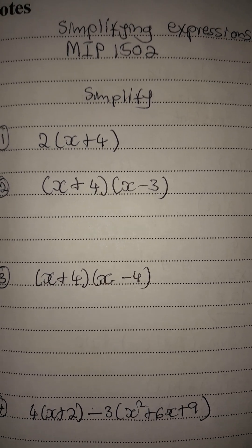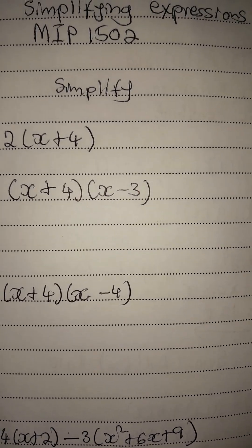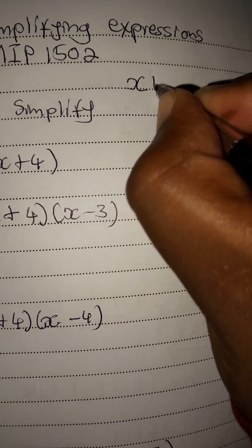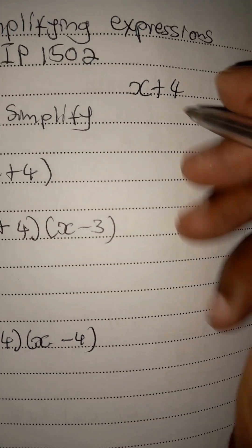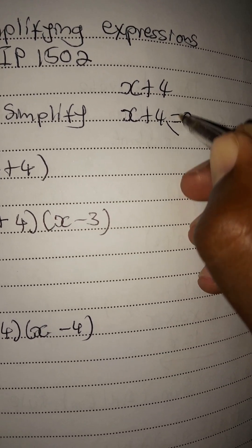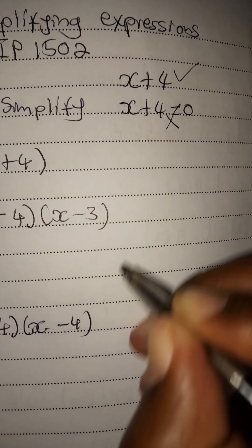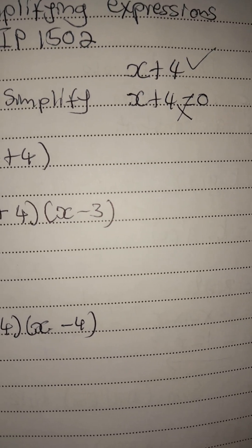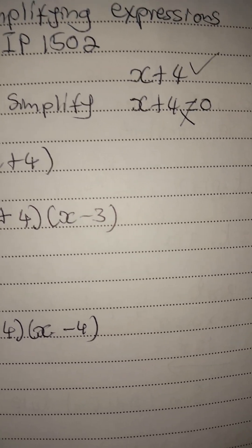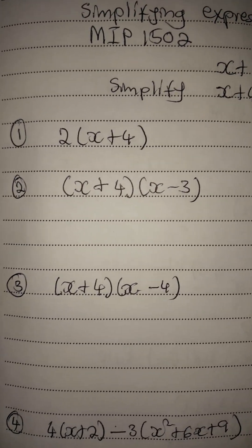When we talk about an expression, we talk about a mathematical statement that does not have an equal sign — it's different from an equation. For instance, x plus 4 is an expression, but x plus 4 equals zero is an equation because it consists of an equal sign. An equation you solve, but an expression you simplify.